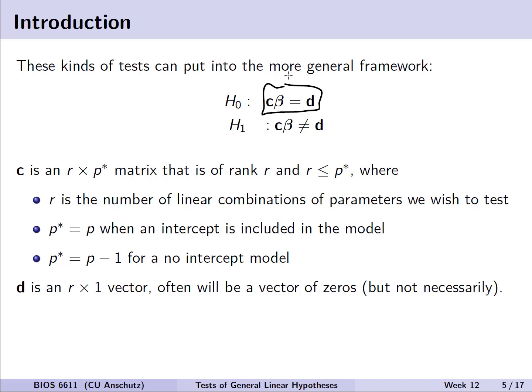D is an r by 1 vector, and often this is a vector of 0s, where we're testing if these different combinations of parameters are equal to 0, but it doesn't necessarily have to be equal to 0. If you have a very specific hypothesis, for example, the combination is equal to a value of 10.3, you can also test that in this framework.